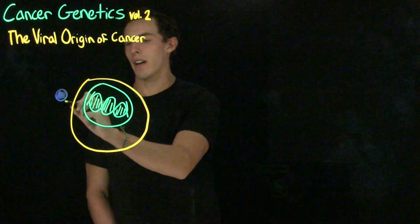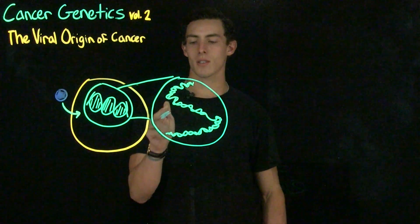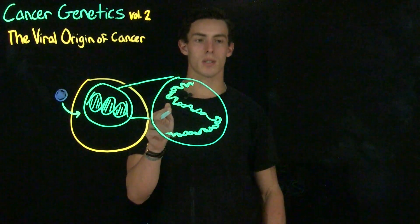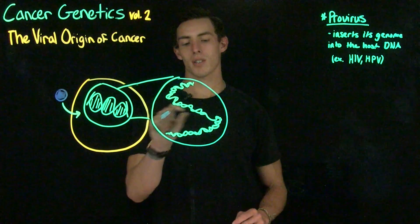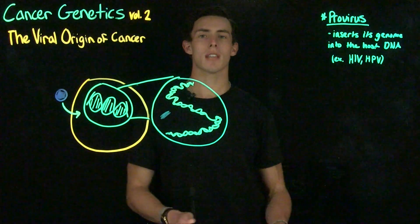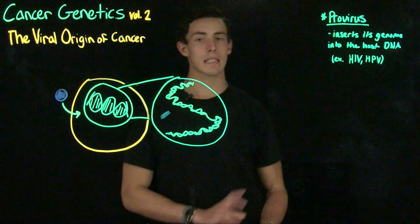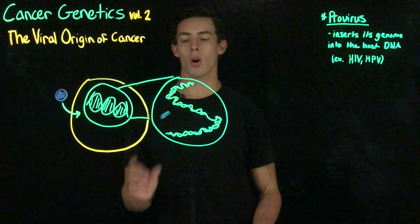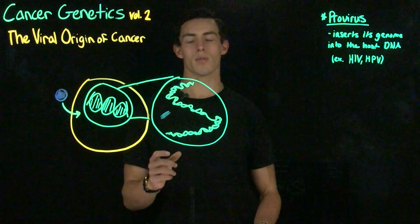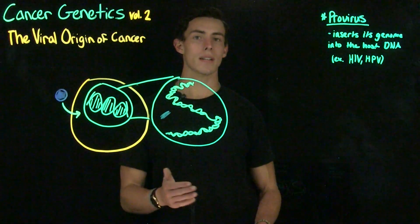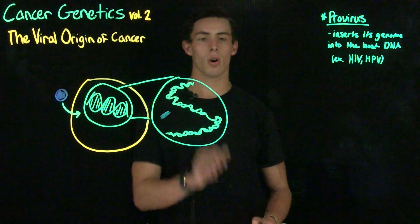Let's say that we have a virus here and it infects our cell. This is the host cell nucleus right here and this is the genetic information from the virus. If the virus is something called a provirus, it's going to insert its genetic information into the host cell DNA. Some examples of this are HIV and HPV. HPV is a DNA virus and HIV is an RNA virus. Because HIV is an RNA virus, it's what we call a retrovirus, which is going to take an RNA genome and turn it into DNA, which is then inserted into our DNA genome.